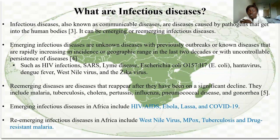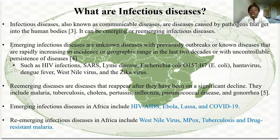So what are infectious diseases? Infectious diseases, also known as communicable diseases, are diseases caused by a pathogen that enters the human body, making the host sick. They can be classified as emerging infectious diseases or re-emerging infectious diseases.